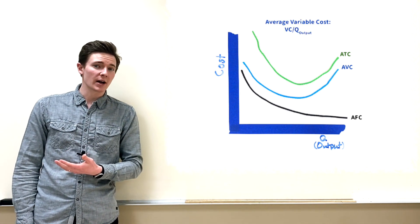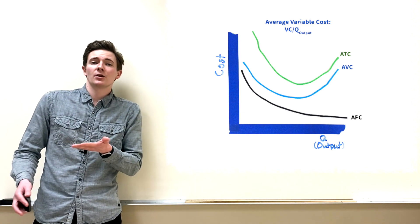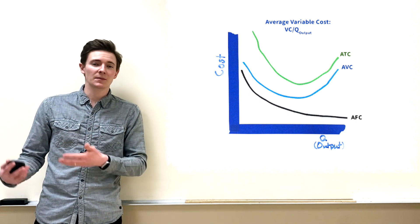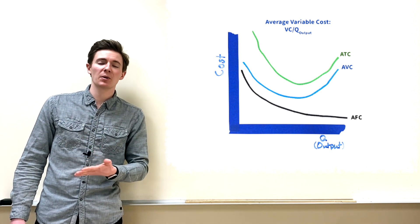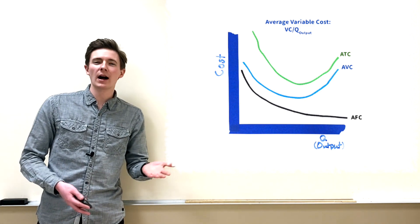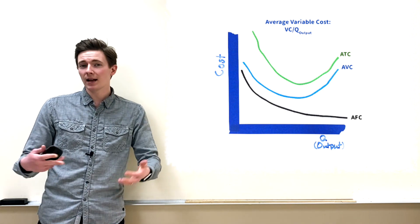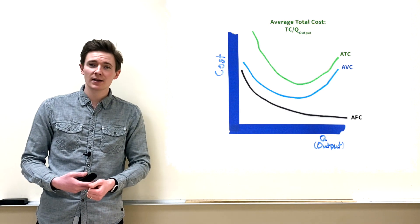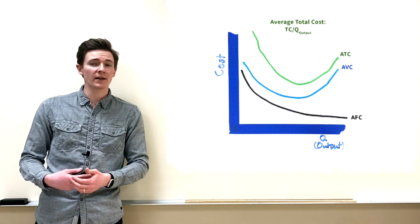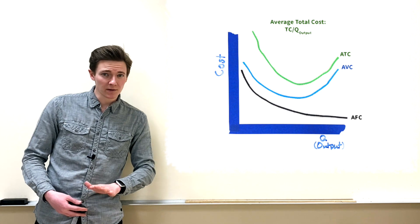Then we have average variable cost. That variable cost curve initially increased at a diminishing rate and then skyrocketed, so its average looks like a smiley face — costs per unit fall due to specialization and division of labor, but then rise as we crowd out space. Average total cost is average variable cost plus average fixed cost, so it sits above AVC by the amount of AFC above zero.